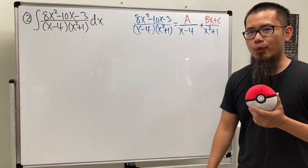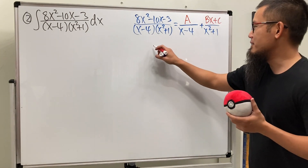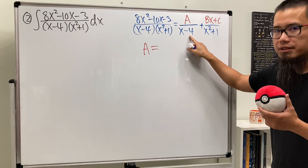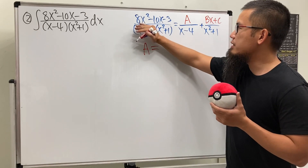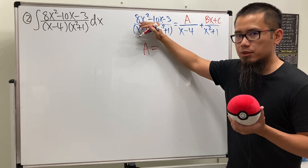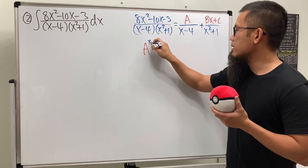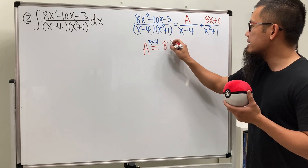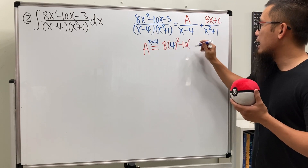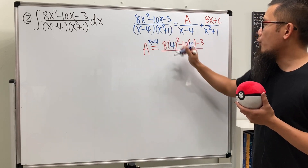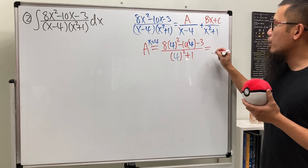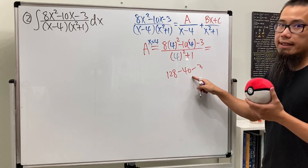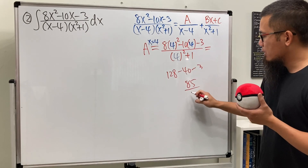We can use the cover-up method for A. We cover the (x minus 4) factor and set x minus 4 equal to zero, so x equals 4. Plugging into the remaining expression: 8 times 4 squared minus 10 times 4 minus 3, over 4 squared plus 1. That's 128 minus 40 minus 3 = 85, over 17, which gives A equals 5.